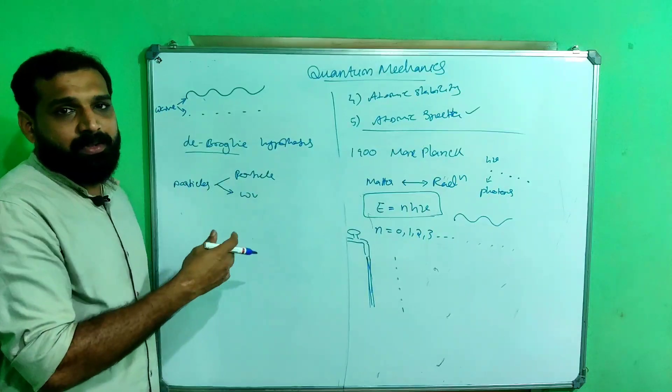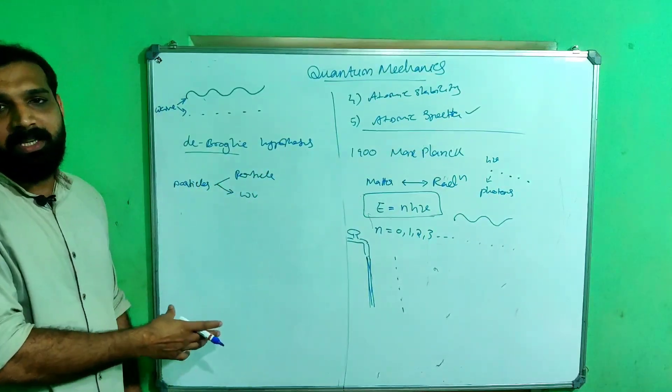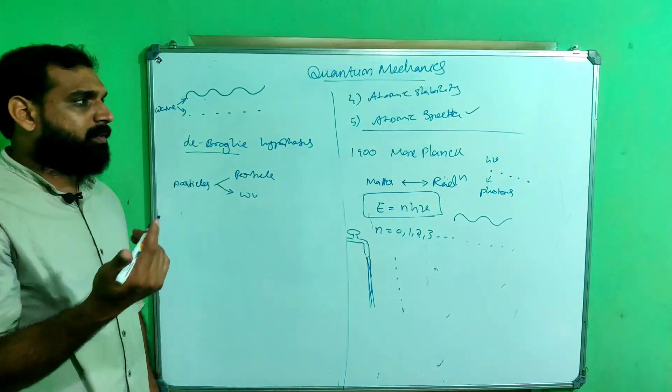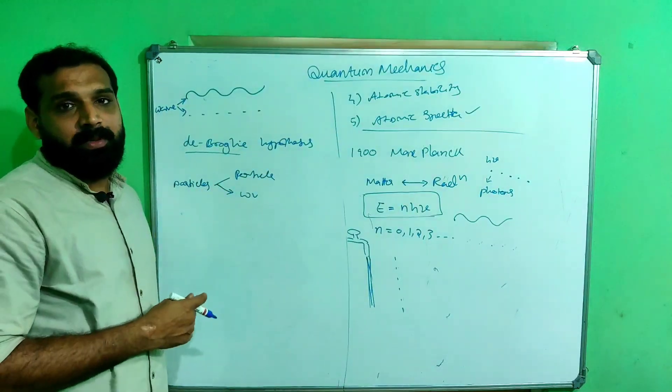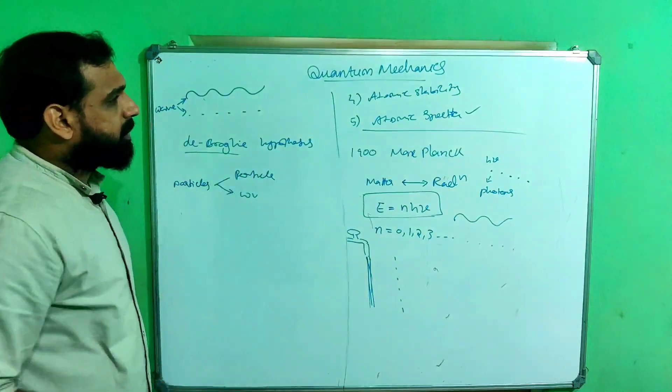De Broglie suggested that every particle is associated with a wave called a matter wave or de Broglie wave. Based on his proposal, four years later this was experimentally confirmed using the Davisson and Germer experiment, and many applications were developed using this theory — for example, the electron microscope.